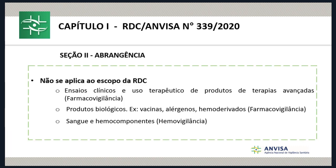É importante destacar a exclusão da abrangência da norma: ela não se aplica aos ensaios clínicos e uso terapêutico de produtos de terapias avançadas, pois existe uma norma específica para esse tipo de produto. Os produtos biológicos como vacinas, alérgenos e hemoderivados já estão estabelecidos sob o escopo da farmacovigilância, assim como o sangue e hemocomponentes fazem parte do escopo da hemovigilância de longa data.